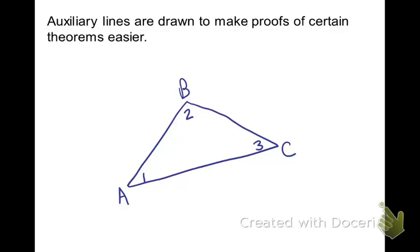One of the things that's great about section 4-1 is we get to start doing proofs. Sometimes it's easier to do a proof if you draw an auxiliary line. An auxiliary line is a line that's drawn so you can make certain proofs or certain theorems easier to solve.